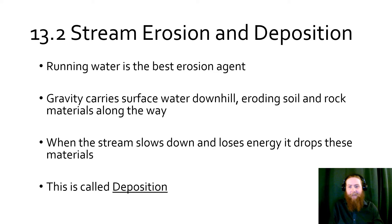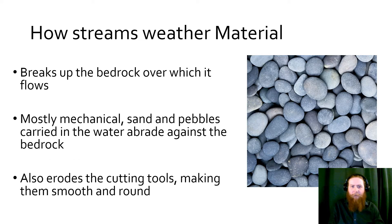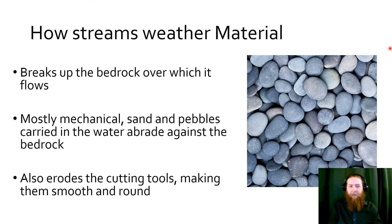How do streams actually weather material? How do we get those nice, smooth rocks? Any water flowing over bedrock is going to break it open as it continually wedges itself down in there and flows through. We get a lot of mechanical weathering as sand and pebbles carried in the water abrade the bedrock. The water also erodes what I call the cutting tools — the things carried inside it: the sand, silt, particles, rocks, and boulders, depending on how big your river is.